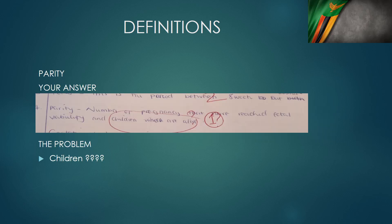It's sad that we are talking about parity. When you talk about parity, don't talk about children. Parity has nothing to do with children — it has to do with pregnancies. Parity is the number of pregnancies a woman has had beyond fetal viability, not the number of children, and not whether those children are alive or dead. It's regardless of outcome. Remove 'children' from your definition of parity. This candidate likely got a zero because they said 'children.'